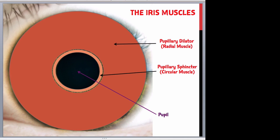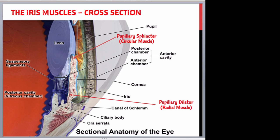The dilation and contraction of the iris is achieved using two muscles within the iris itself. These are the pupillary dilator, or radial muscle — the large orangey-coloured muscle here — and the pupillary sphincter, or circular muscle — the smaller pinkish circle here. On this cross-section and close-up of the iris, the pupillary sphincter (circular muscle) can be seen near the periphery of the iris, with the pupillary dilator (radial muscle) lining the posterior aspect of the iris.